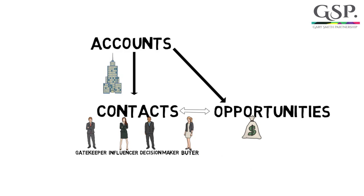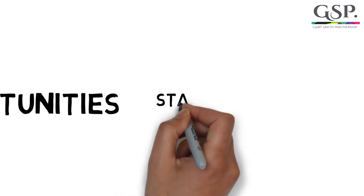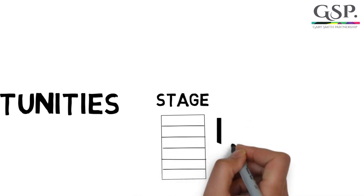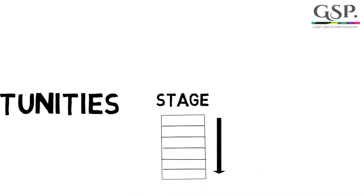Let's talk a bit more about opportunities. There might be lots of information specific to your business that you want to record about each opportunity. However, there are three key pieces of information that every opportunity needs. The first is called the stage. The stage is a pick list — it records where the opportunity is in your sales process at any point in time.